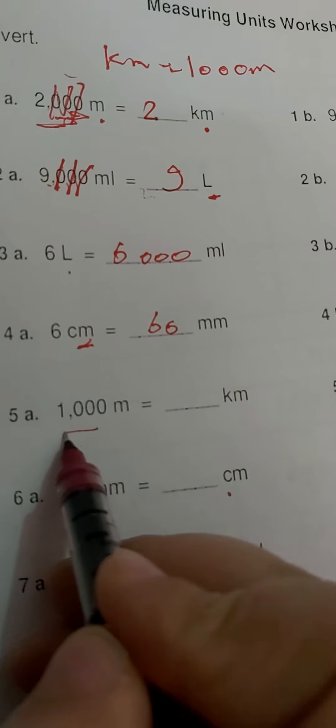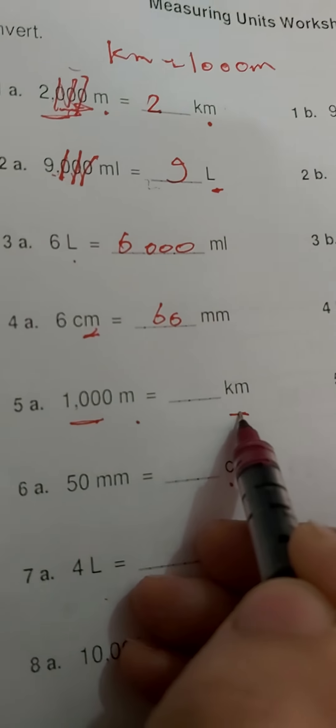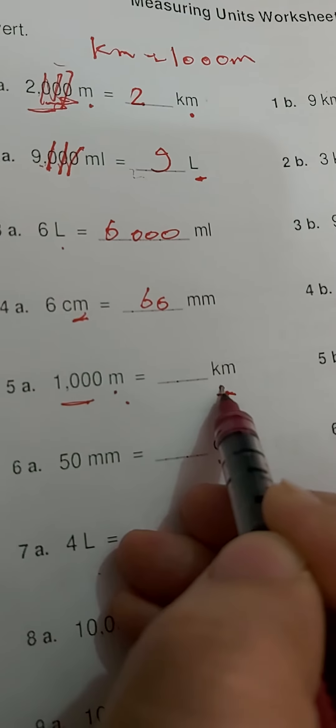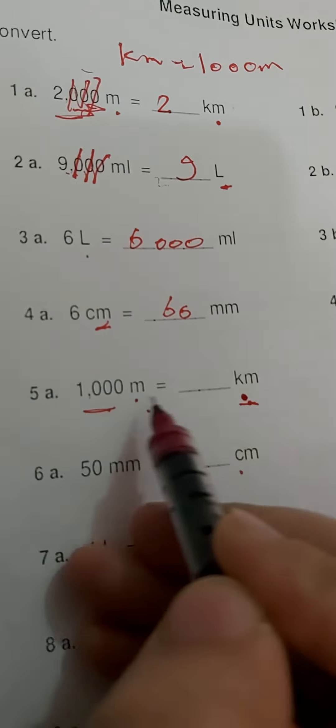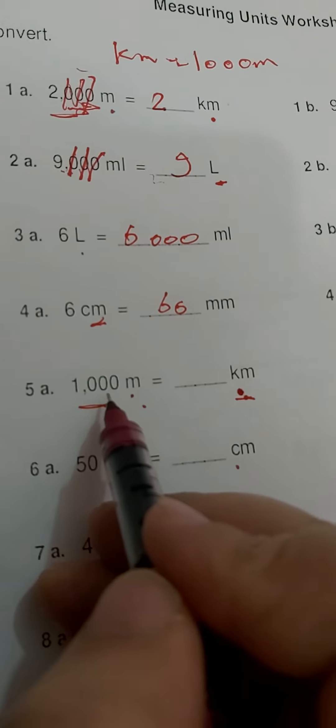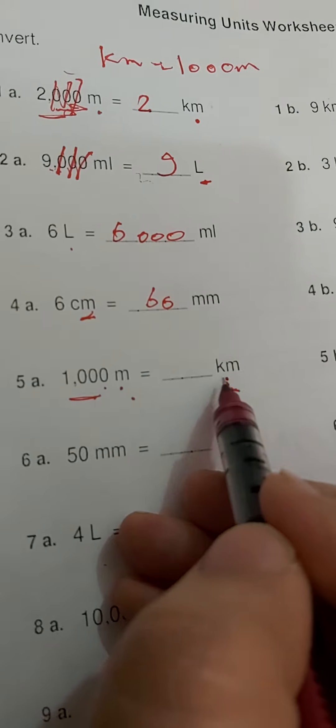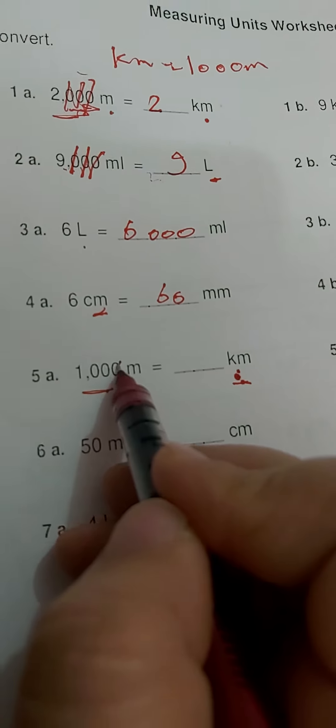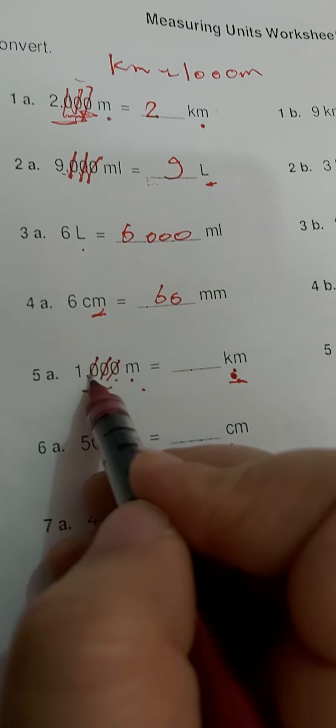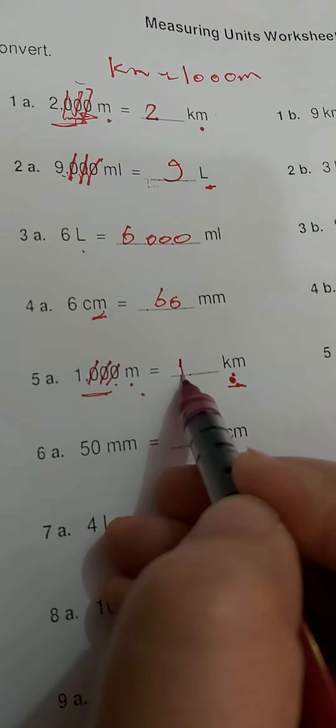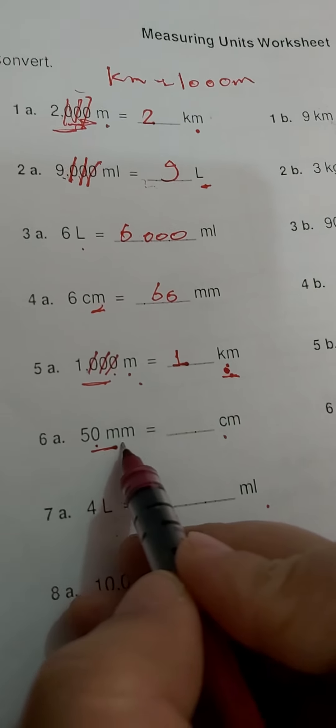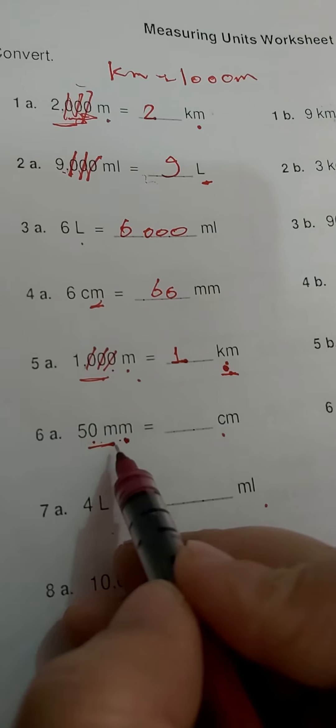Okay, let's make 1,000 meters equal to how many kilometers. From small to big units, I will do what? How many meters in a kilometer? 1,000. So I will remove three zeros, so it will be one.